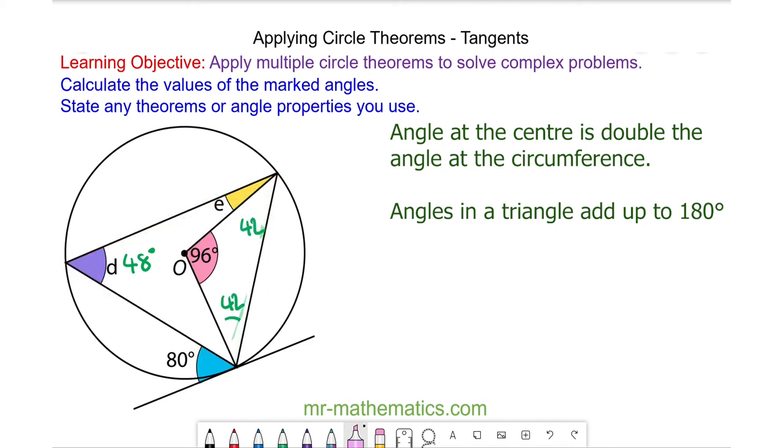And the alternate segment theorem tells us that this angle of 80 degrees is equal to this angle. So angle e will be 80 take away 42, which is 38 degrees.